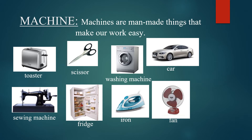You will see a few machines on our screen: toaster, scissors, washing machine, car, sewing machine, fridge, refrigerator, iron, and fan. You will also have a lot of these things — like scissors, iron, fan, and fridge — in your home. So these are all machines that make our work easy.